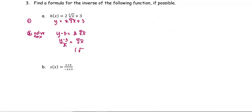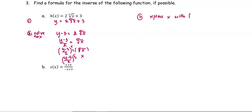After that, we are going to raise both sides to the fifth power, to obtain x equals the quantity y minus 3 over 2, raised to the fifth power. In step number 3, we replace x with the inverse notation and y with x. So we have the inverse function equals x minus 3 divided by 2, quantity to the fifth power.